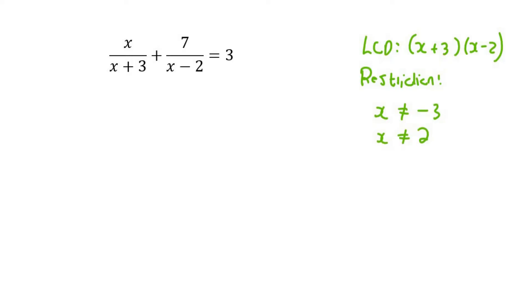So now let me just rewrite everything. We're going to have to multiply this one with x minus 2, this one with x plus 3, and this one with both.